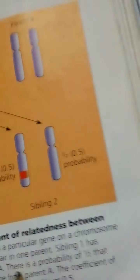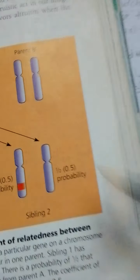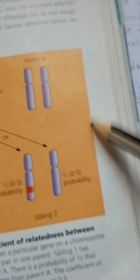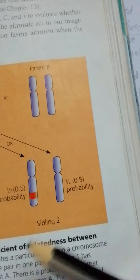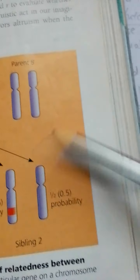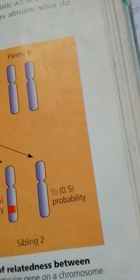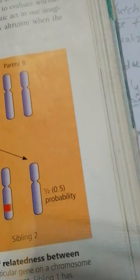Welcome to biology, the study of life. Notice the coefficient of relatedness between siblings. The red band indicates a particular gene on a chromosome of a homologous chromosome there in one parent. Sibling one has inherited the gene from parent A. There is a probability of one half that sibling two will also inherit this gene from parent A. The coefficient of relatedness between the two siblings is one half, or 0.5.